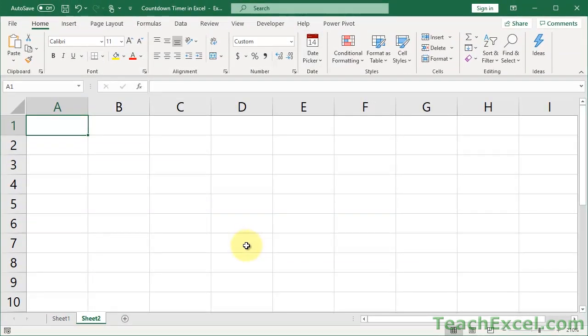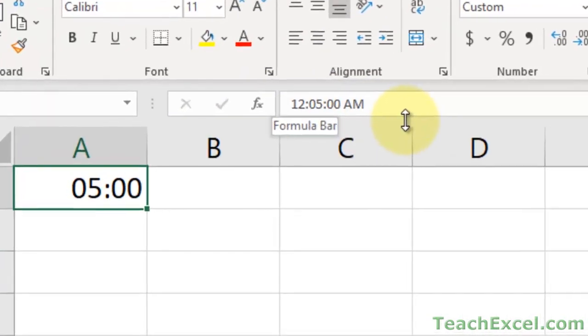And now once you have it done like that, we can actually just input some time here. So we could do 00:05:00 and we have five minutes in the cell.